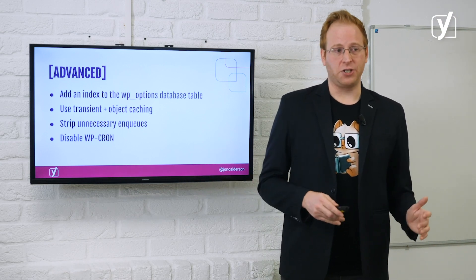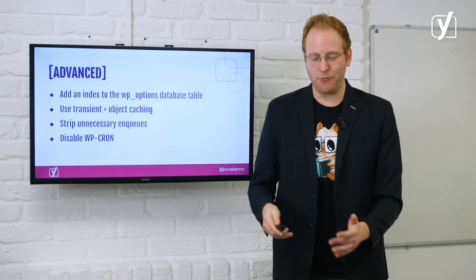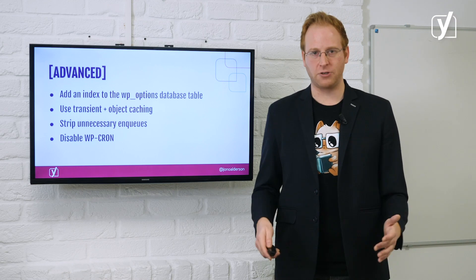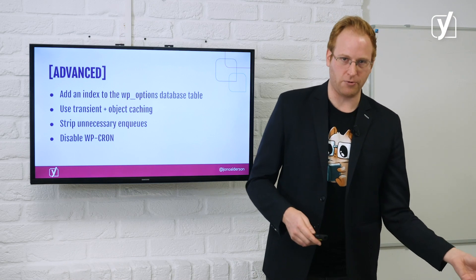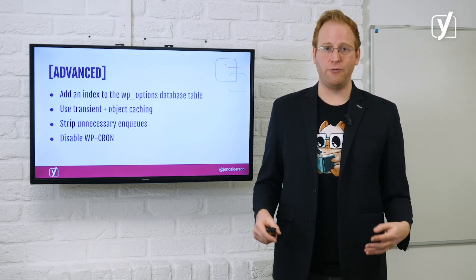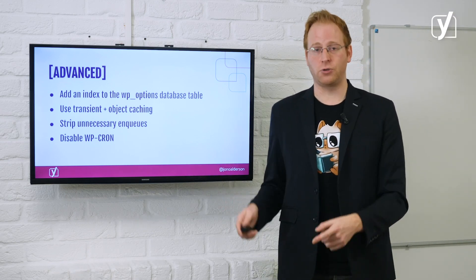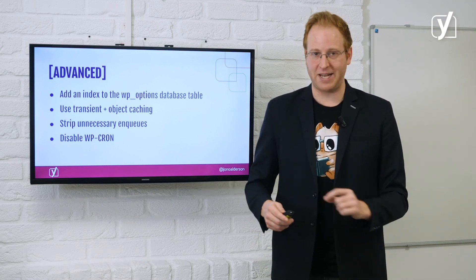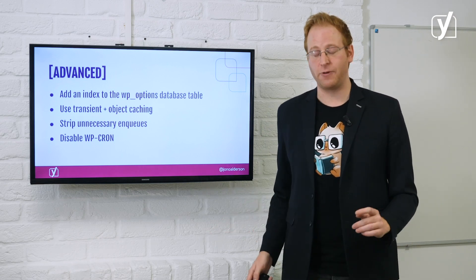If you've got a big site, you want to disable WordPress's native cron system. Every time anybody loads your website, WordPress does a whole load of housekeeping — do I need to update any plugins, am I up to date, are my themes alright? That's a lot of processing. If you've got a big site with lots of visitors, every time a visitor hits it, it's doing all this housekeeping. You can turn that off, talk to your hosting company, and it will make your site a huge amount faster. One of the best tips for heavily trafficked sites.